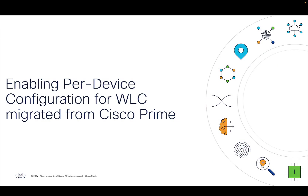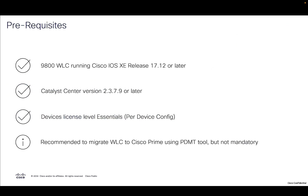Now let's look at how to enable per device configuration for a wireless controller that has been migrated from Cisco Prime. The prerequisites are pretty similar: the 9800 wireless controller should be on release 17.12 or later, Catalyst Center version 2379 or later, and device licenses — we support essential license onwards. The recommendation is to migrate the wireless controller using the PDMT tool, but it's not mandatory.